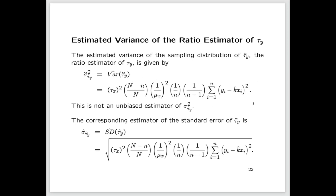The formula also involves the sum of the squared deviations between the observed y values and k̂ times x_i values. Note this is not an unbiased estimator of the variance of τ̂_y. Once we have this estimated variance, we can take its square root to get the corresponding estimator of the standard error of τ̂_y.